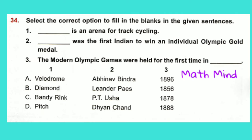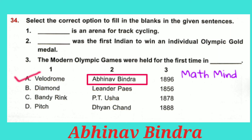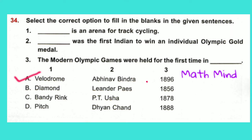Question No. 34: Select the correct option to fill in the blanks. Statement 1: Dash is an arena for track cycling — Option A is correct: Velodrome. Statement 2: Dash was the first Indian to win an individual Olympic gold medal — correct answer is Abhinav Bindra. Statement 3: The modern Olympic games were held for the first time in dash — it is 1896. So Option A is correct.